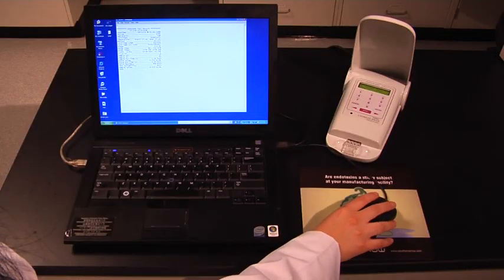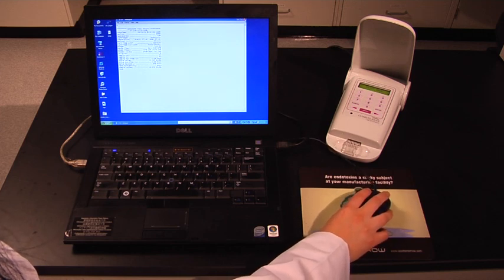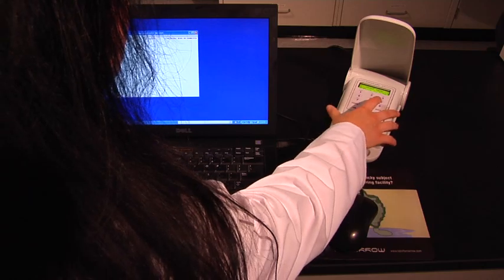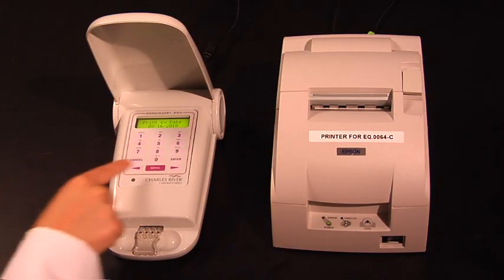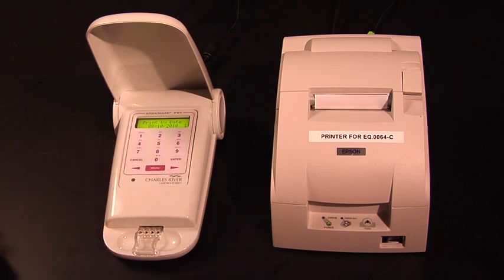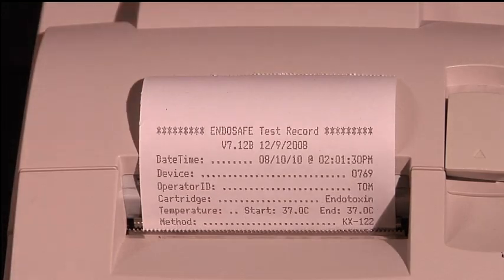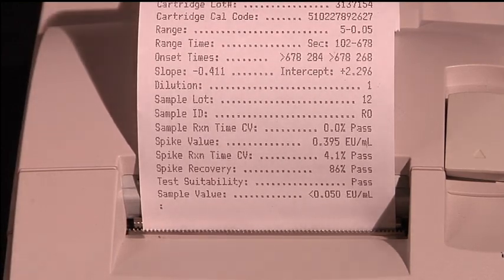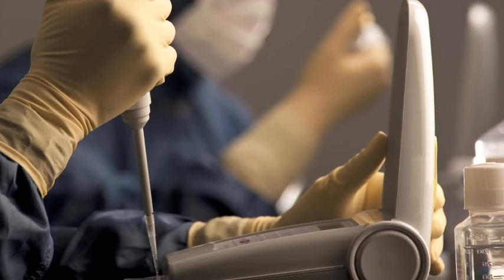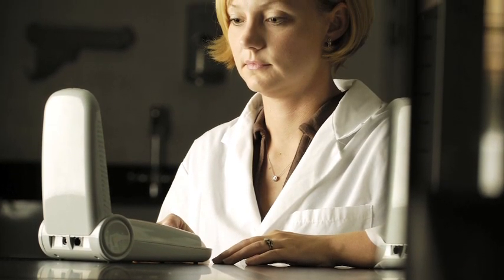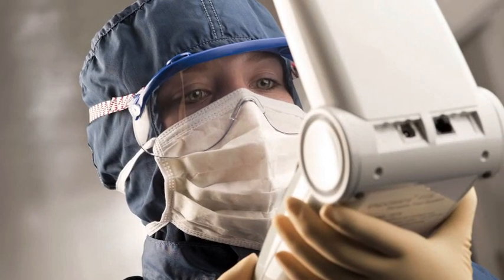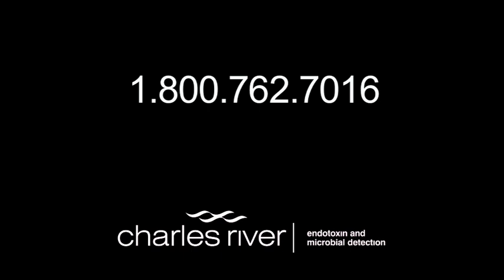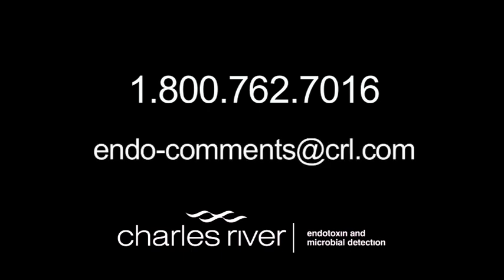If you choose to print, after selecting 4, there will be 3 options for downloading data to the printer: 1. Print Last Test. 2. Print By Date. 3. Print All Tests. Selecting one of the 3 choices on the PTS Reader keypad will send results to the connected printer. Please keep in mind that printing data directly through a portable printer or through the Endoscan-V software constitutes an official record of the assay. Now that you have gone through the steps, you are ready to begin using your brand new PTS and begin getting results in as little as 15 minutes. If you have any questions, please feel free to contact our offices at 1-800-762-7016 or endo-comments at crl.com.